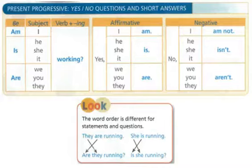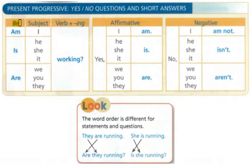In this screencast, we will look at the present progressive yes-no questions and short answers. The format of the question is the verb to be, the subject, and then the verb plus ing.